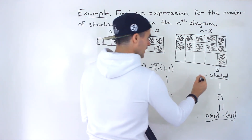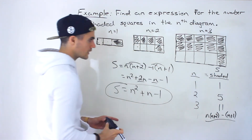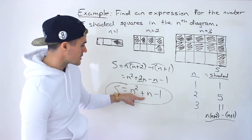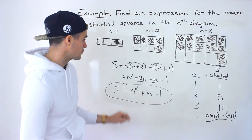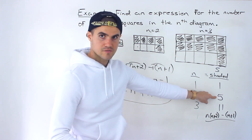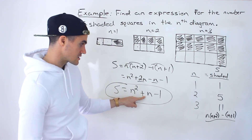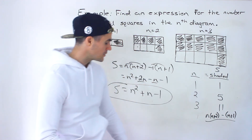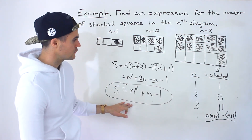Let's verify: plug in n equals one — one squared plus one minus one equals one. Correct. Plug in n equals two — four plus two minus one equals five. Correct. Plug in n equals three — nine plus three minus one equals eleven. Correct. We can be confident this is the right expression.